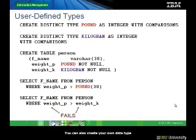You can also create your own data type based on built-in data types. There are defined as user-defined types, or UDTs. One of the reasons for using UDTs is to enforce rules. For example, in the slide, the person table was created with three columns.